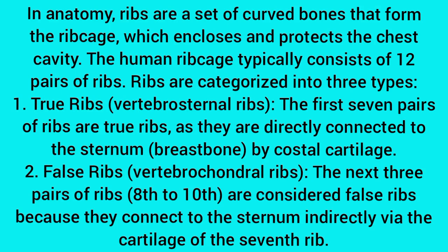In anatomy, ribs are a set of curved bones that form the rib cage, which encloses and protects the chest cavity. The human rib cage typically consists of 12 pairs of ribs. Ribs are categorized into three types. True ribs, also called vertebral sternal ribs, are the first seven pairs of ribs, as they are directly connected to the sternum.